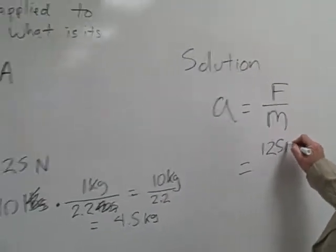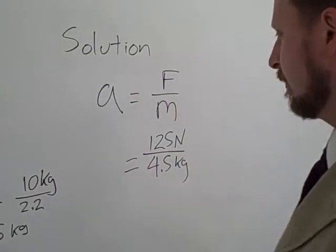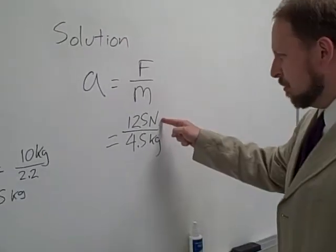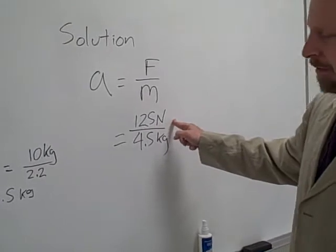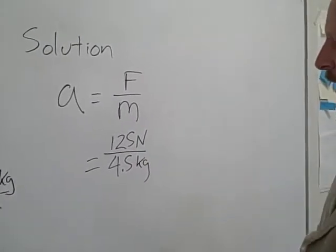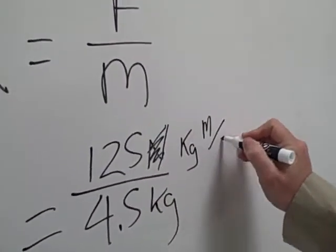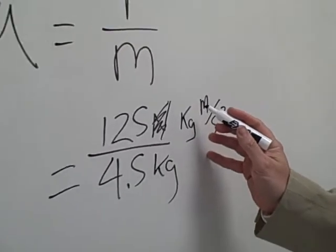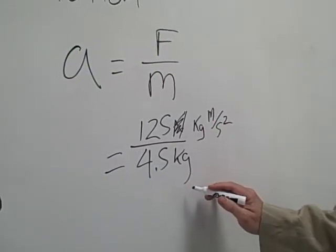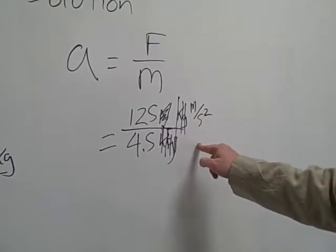Now I put in my numbers. A equals 125 newtons divided by 4.5 kilograms. It looks like my answer is going to be in newtons per kilogram — but that's not what we want. We want an acceleration. Though acceleration can be expressed in newtons per kilogram, it would be better to express it a different way. So instead of newtons, I'm going to write what newtons actually are: a newton is a kilogram times a meter per second squared. Now you'll notice we have kilograms over kilograms — you know what to do: cancellation. Now I can see that my answer will be in meters per second squared.